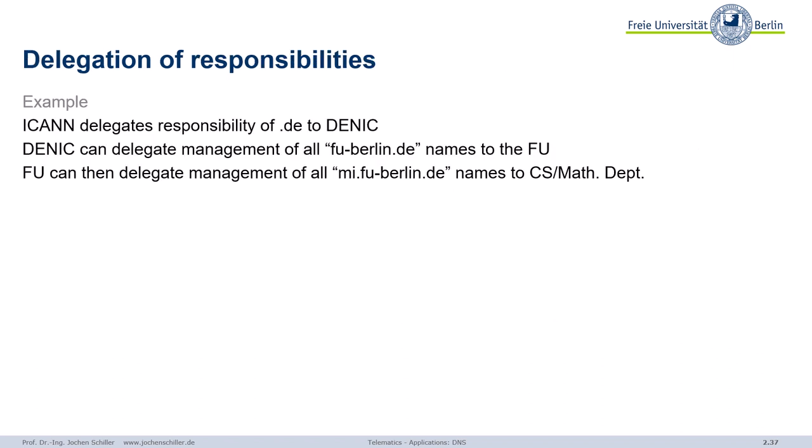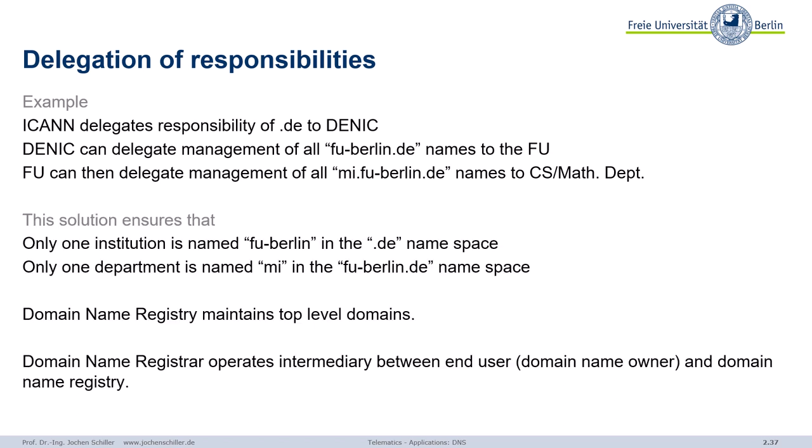So that's the idea. In the end, ICANN delegates responsibility of the country code .de to DENIC. And DENIC delegates FUBERLIN.DE to Freie Universität. And Freie Universität can then delegate the management of all these names inside one of the third levels to the computer science and math department. This ensures that there is only one institution called FUBERLIN in the DE namespace. There could be, though I'm not aware of it, another one saying FUBERLIN.se.